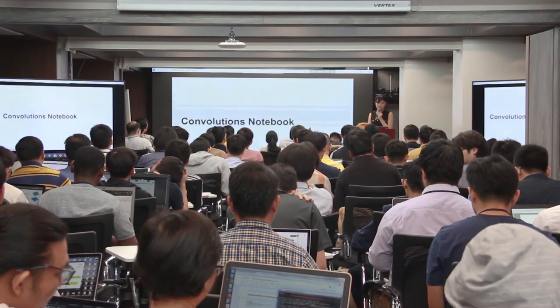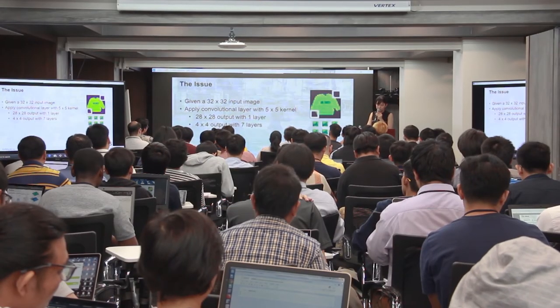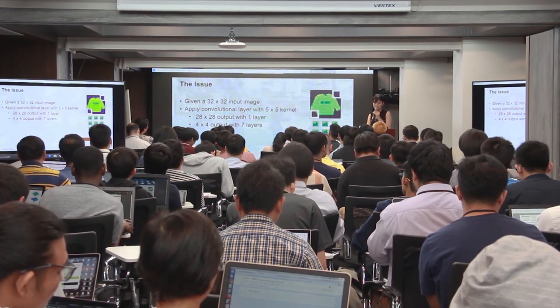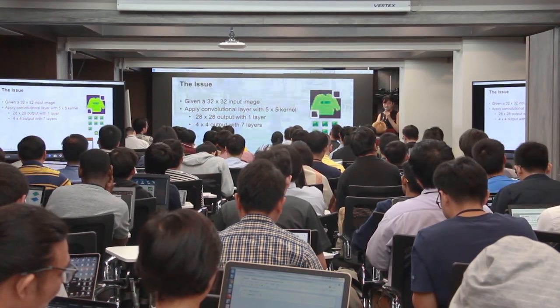Now let's talk about padding and stride. The intuition: if we have a 32×32 image and apply 5×5 convolutional kernels, after just seven layers the output shrinks to only 4×4 pixels — losing a lot of information. Also, edge pixels only get processed once by the kernel while interior pixels get processed many more times. To avoid this, we pad the image edges with zeros. Zero-padding doesn't change the signal, but it allows edge pixels to be covered more uniformly by the sliding kernel.